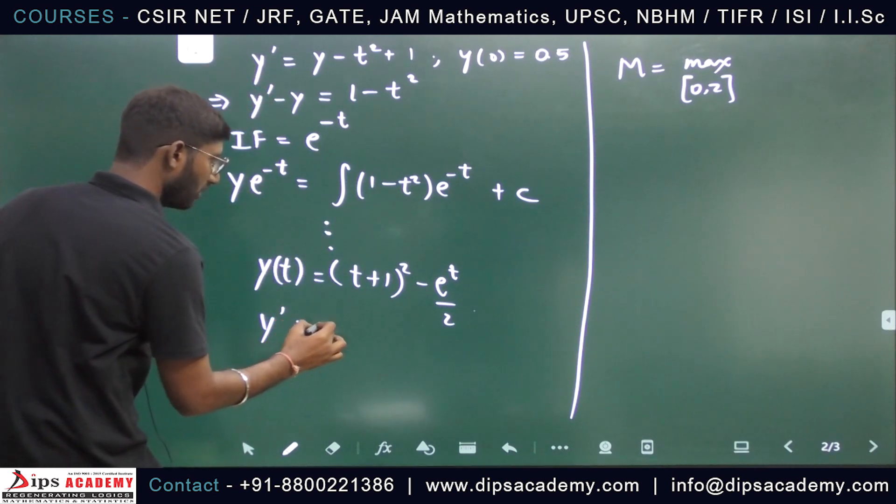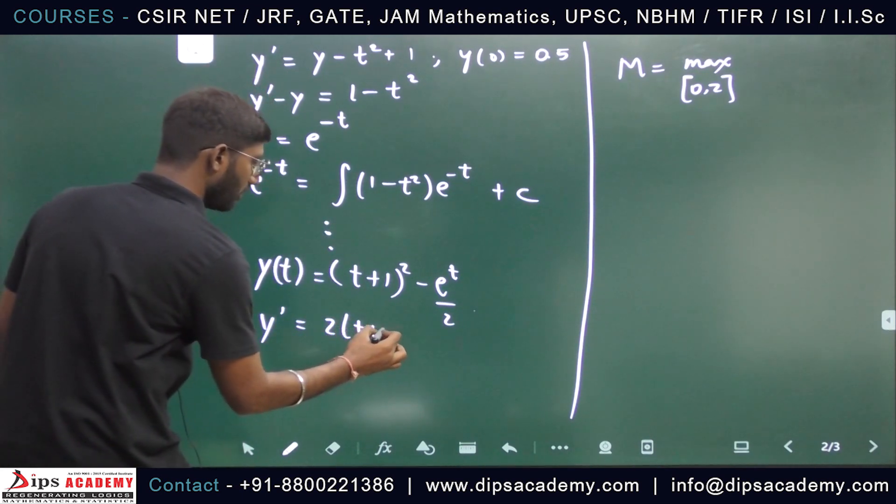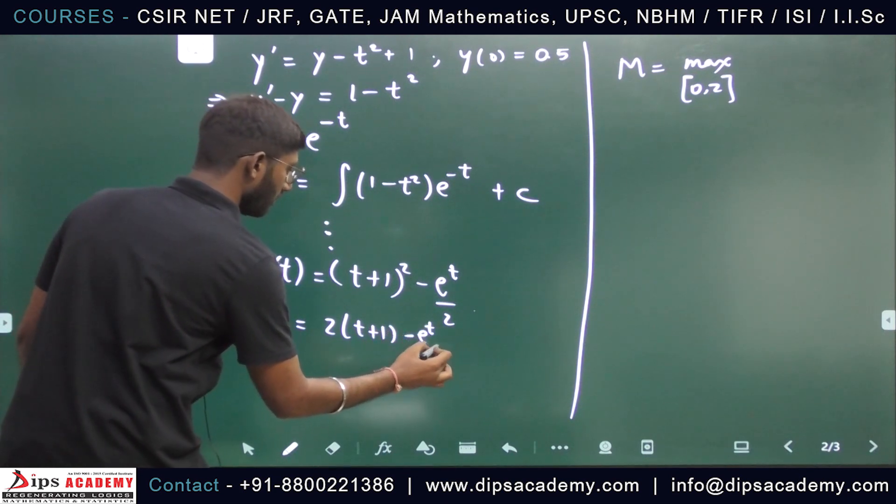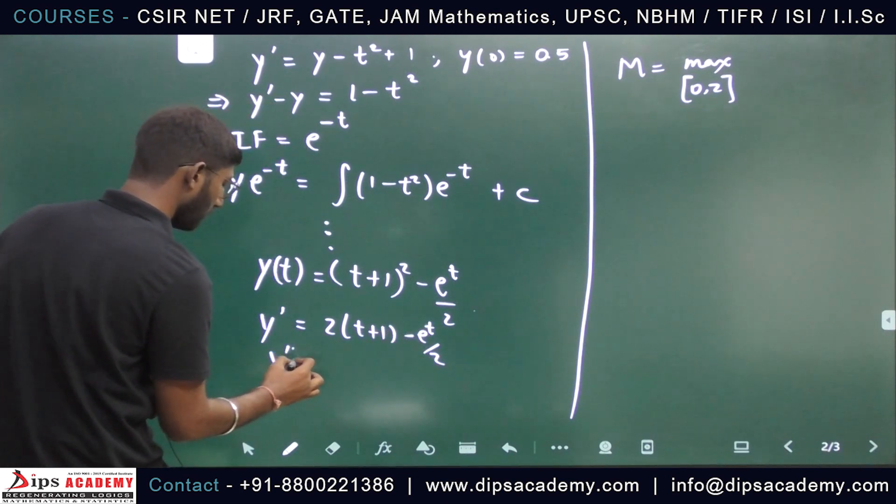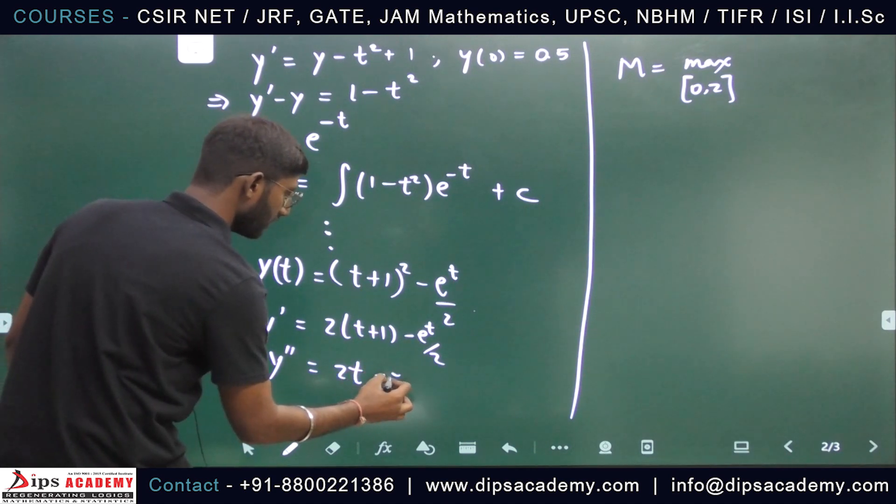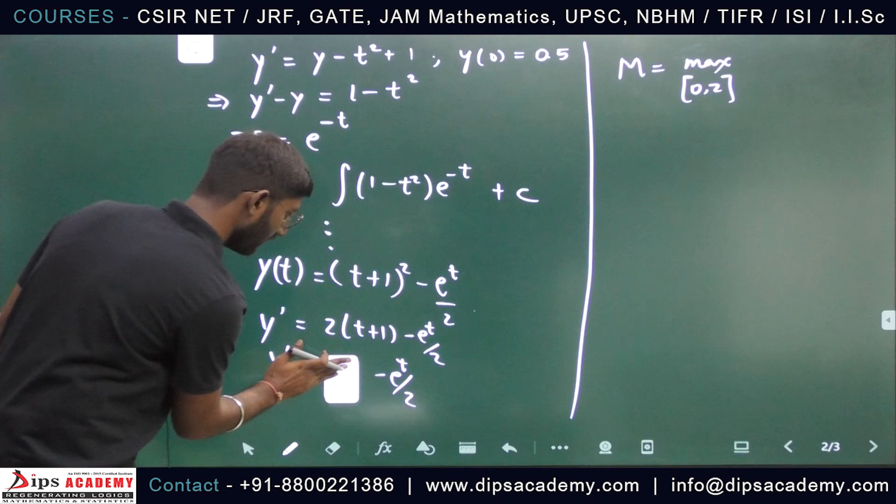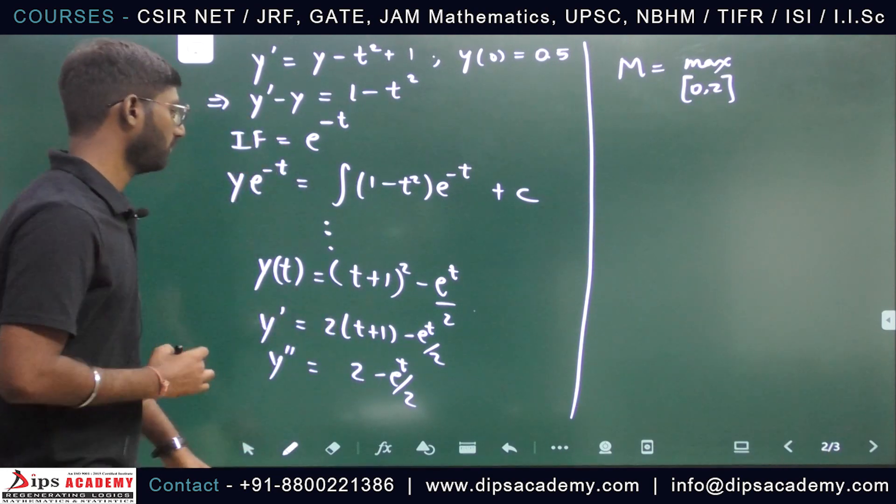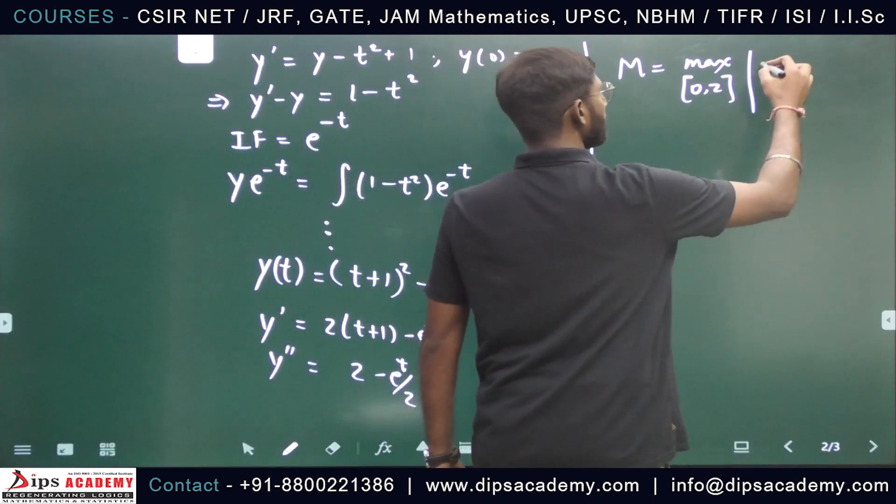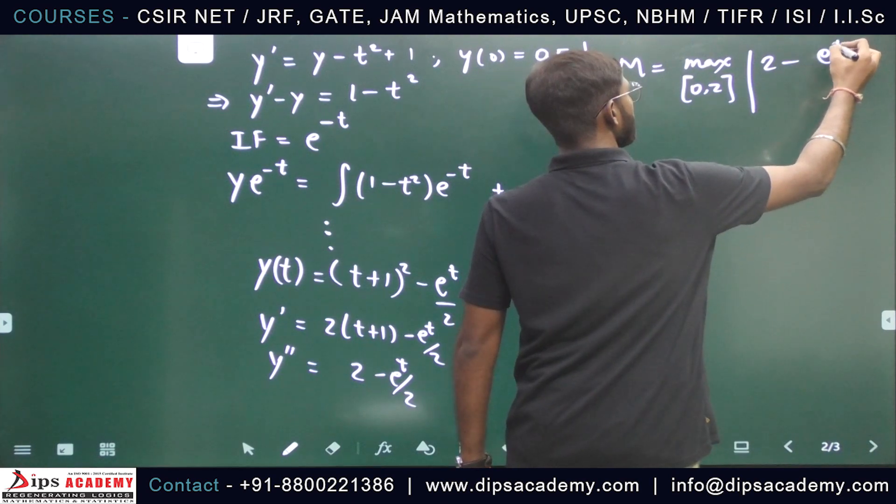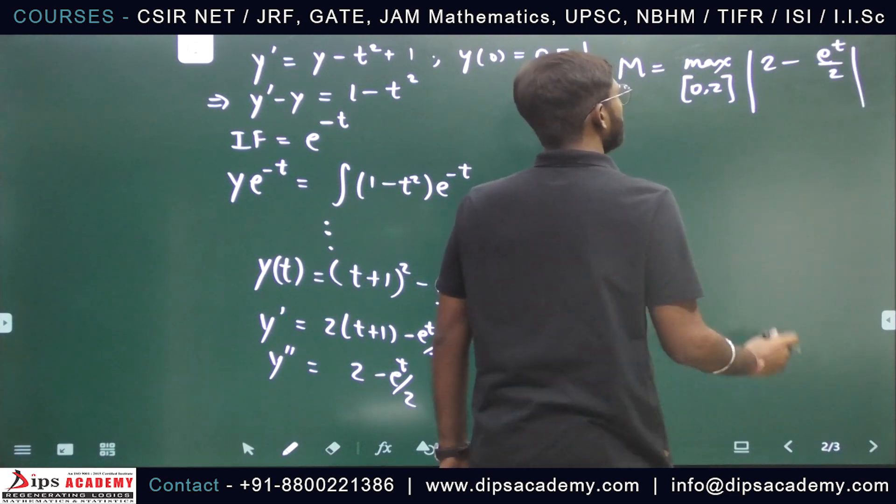y dash will be 2(t+1)*e^t/2, and y double dash of t will be 2*(2 - e^t/2). Sorry, here we have 2 minus e^t by 2.